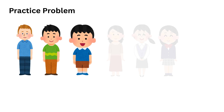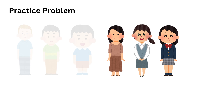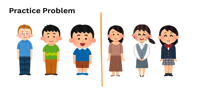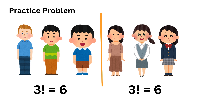But if we want to arrange the boys among themselves and the girls among themselves, we can split the problem. The 3 boys can be ordered in 3 factorial ways, which equals 6. The 3 girls can also be ordered in 3 factorial ways, which is 6 again. Then, using the rule of product, the total number of arrangements with boys and girls ordered within their groups is 6 multiplied by 6, which equals 36.